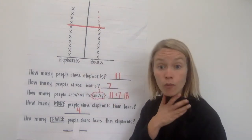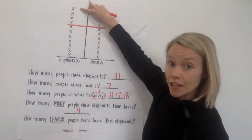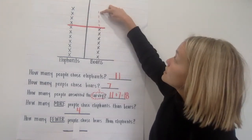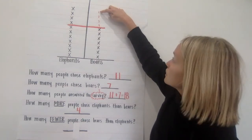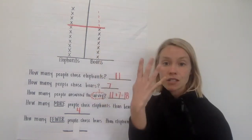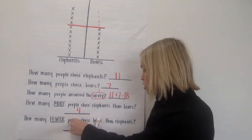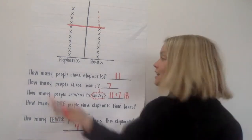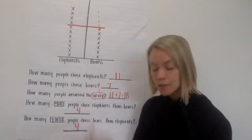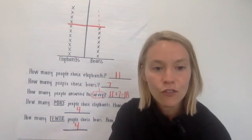Another way to do this is to count backwards. Start at 11 because there are 11 elephants, and count back: 11, 10, 9, 8, 7 — stop at seven because that's how many bears there are. That's four. So how many fewer people chose bears than elephants? Four. Elephants has four more, and bears has four fewer.